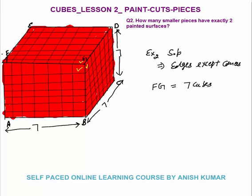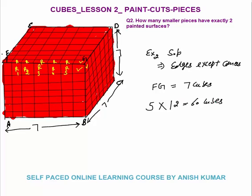On edge FG there are 7 cubes, but we don't take the corner ones, so 5 cubes remain that have exactly 2 surfaces painted. You can see cubes 1 through 5 on the edge each have two red surfaces. So there are 5 cubes on each edge with exactly 2 surfaces painted. With 12 edges: 12×5 = 60 cubes total that have exactly two surfaces painted.